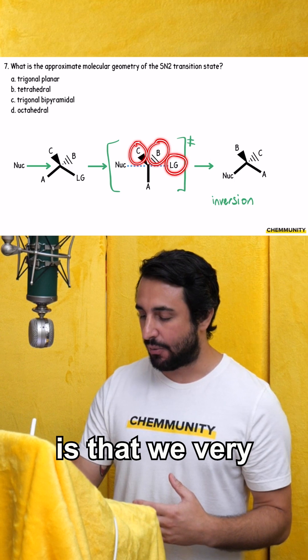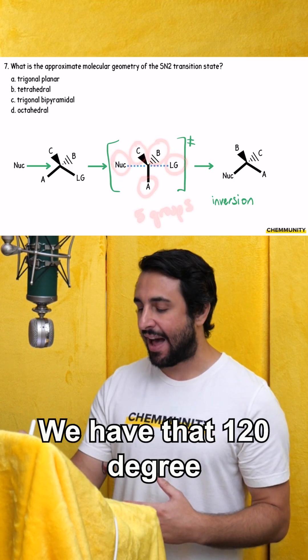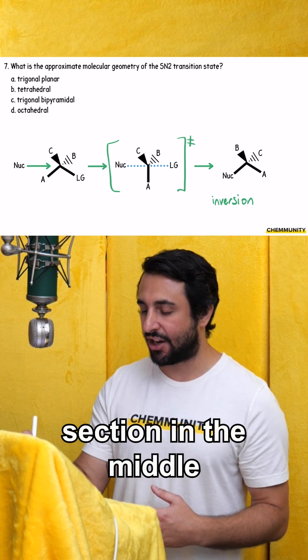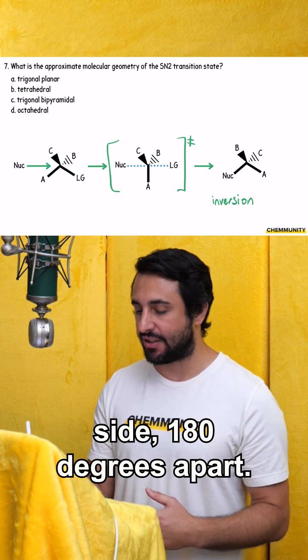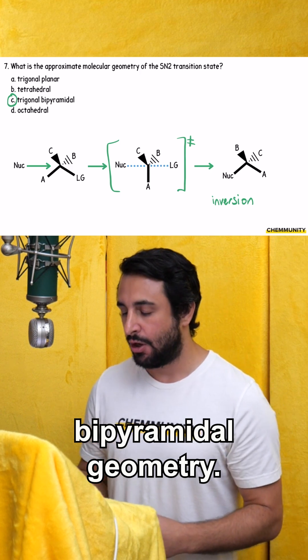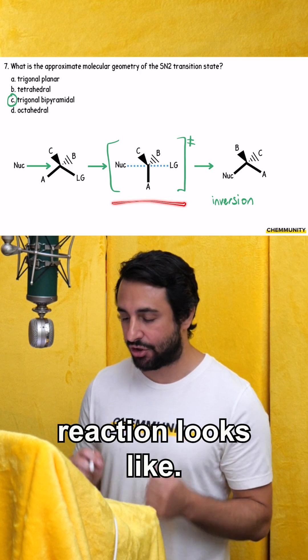And what we can see here is that we very clearly have a trigonal bipyramidal geometry. We have that 120 degree bond angles. It's like a trigonal planar section in the middle, and then bonds on either side 180 degrees apart. So this transition state has a trigonal bipyramidal geometry. And that is what the transition state for the SN2 reaction looks like.